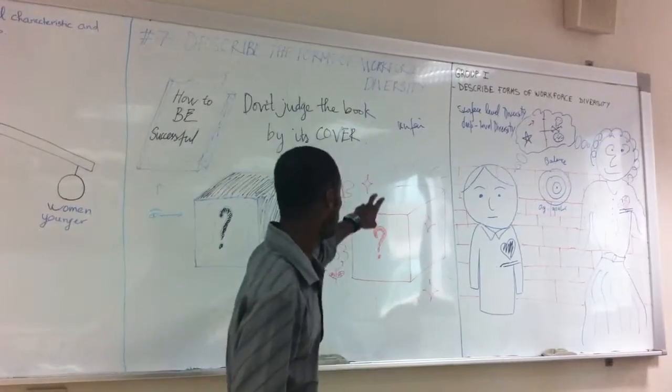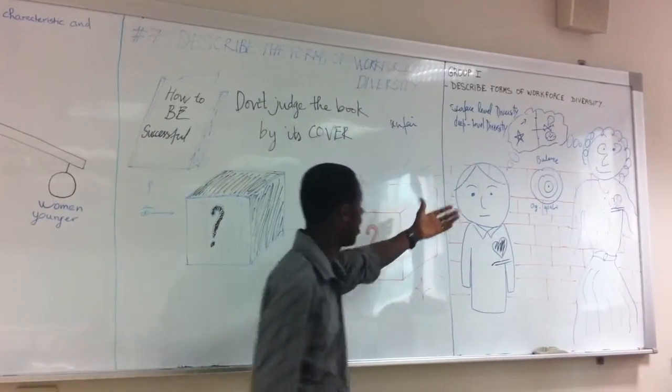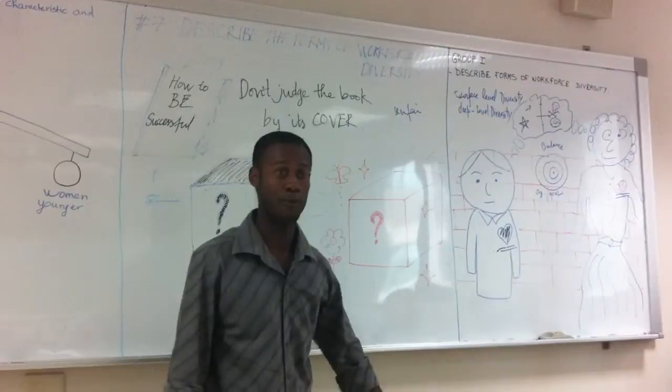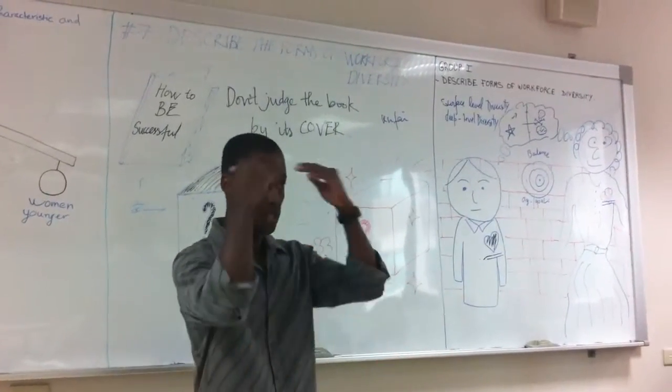So, we distinguish two levels, surface level diversity and the deep level diversity. Everything that you can see immediately.